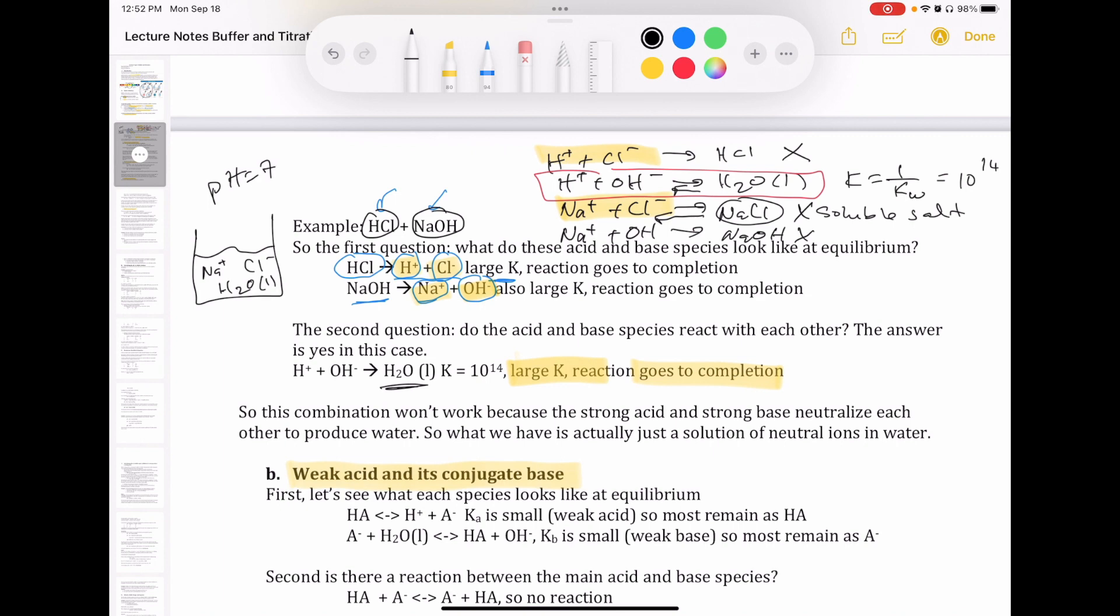There's not an acid or a base in this solution that can act as a buffer. So as a result, this particular combination will not work as a buffer because the strong acid and strong base ends up just neutralizing each other. They react with each other to form water. We don't really have an actual acid or an actual base that would be able to neutralize anything that we're going to add, okay?